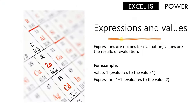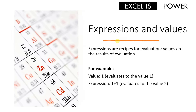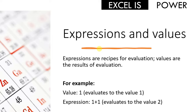Let's differentiate between expressions and values. A value is a numeric value like the number 1 — if I assign this to a variable, I'm telling that variable to evaluate to number 1. However, an expression like 1 + 1 means I'm telling this variable how to reach the result of 2 — I'm not saying this is 2, but I'm telling you how to reach the value 2. Based on this, expressions are recipes for evaluation, whereas values are the result of evaluation. A very slim difference, but very important.